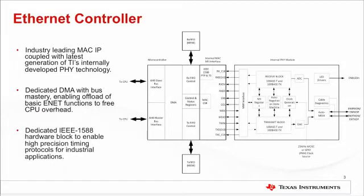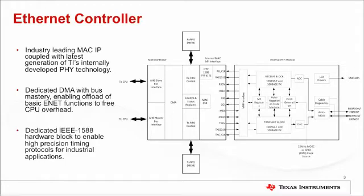To start things off, let's take a quick look at the diagram on the right. The Ethernet controller is an all-new monolithic implementation which consists of an industry-leading third-party MAC IP coupled with TI's latest generation PHY technology. The Ethernet controller also features a fully integrated PHY with MMI bus. A new dedicated DMA controller with bus mastery enables CPU offloading of most basic Ethernet functions. And finally, the new MAC has a dedicated IEEE 1588 hardware block for high-precision timing protocols, ideal for industrial Ethernet applications.